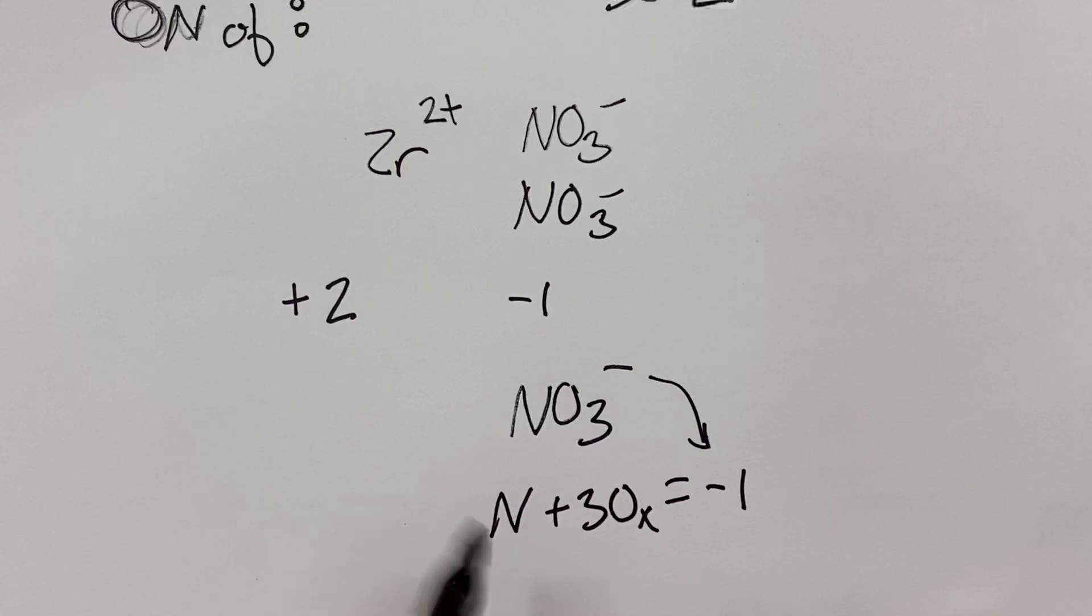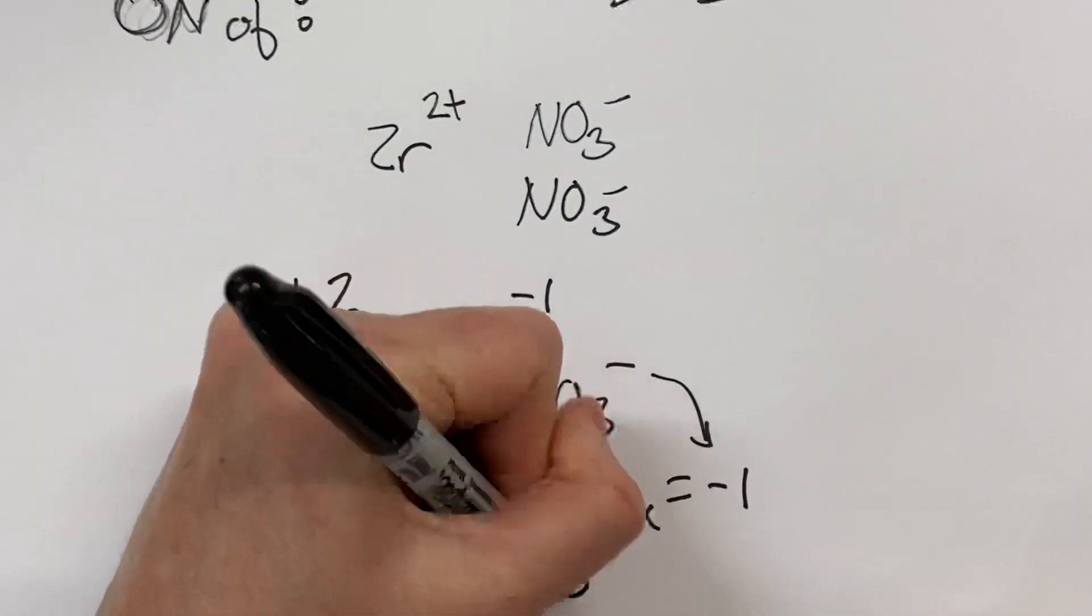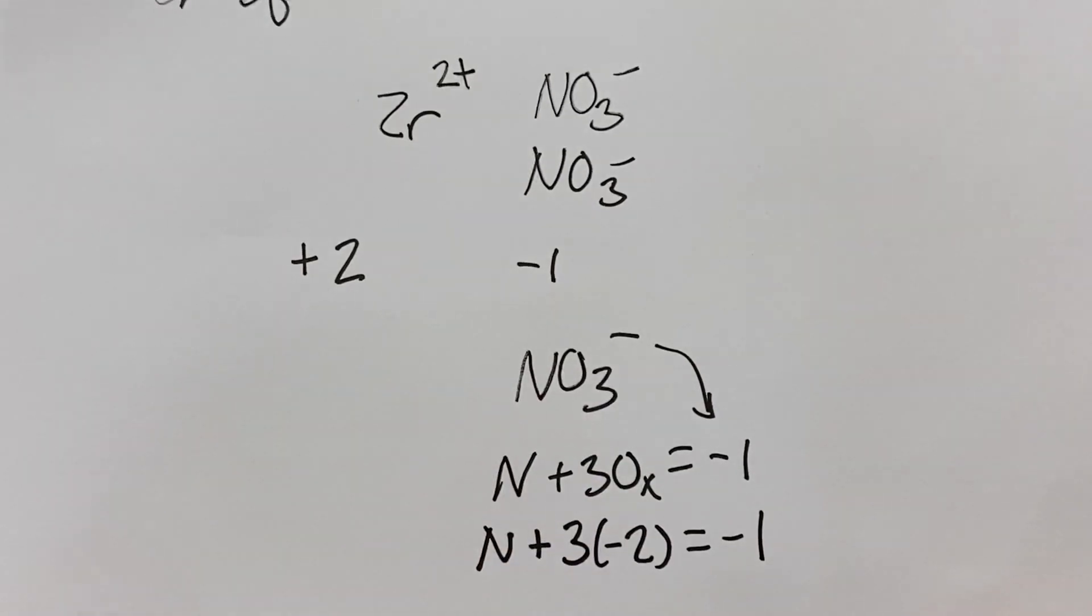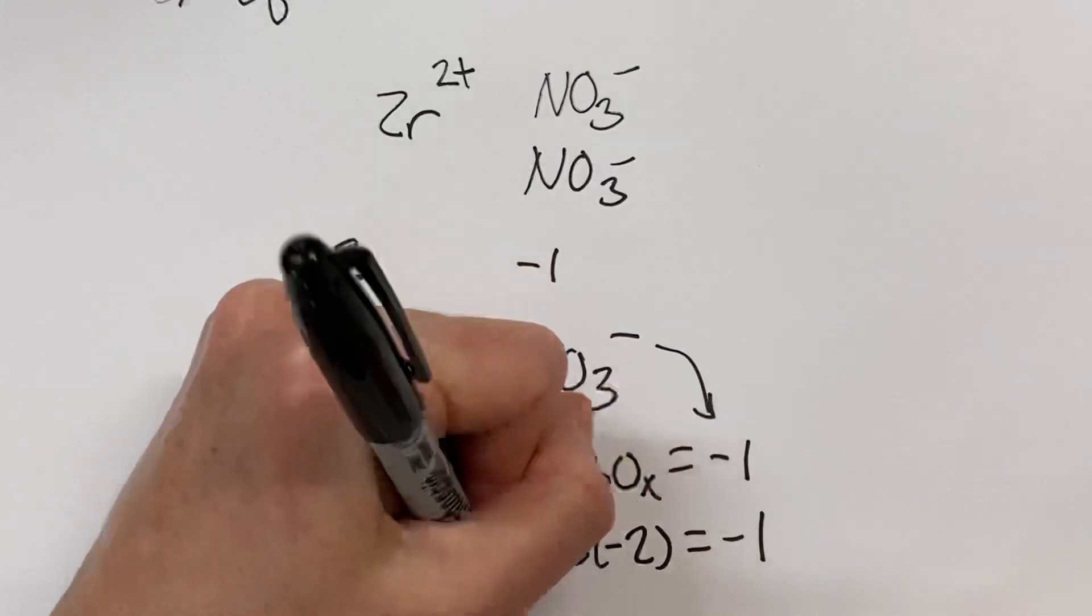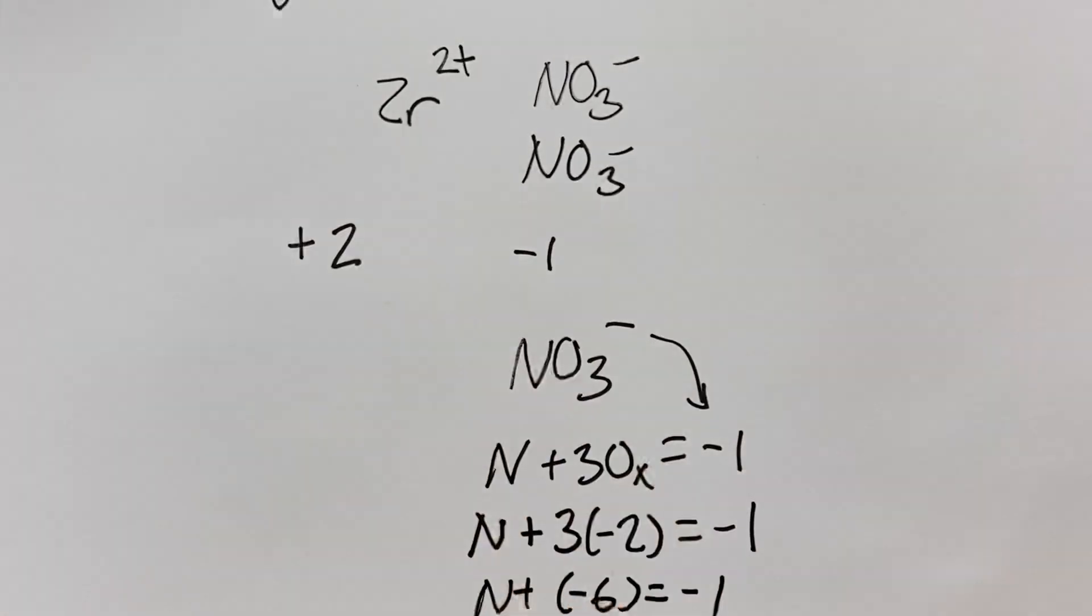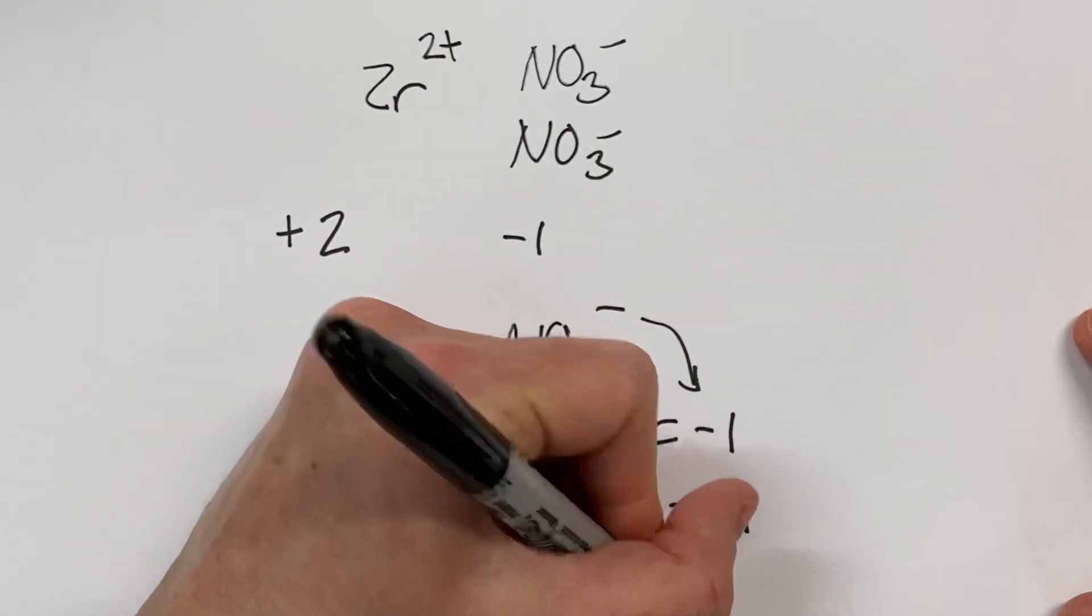All right, so now we know that nitrogen plus three oxygens must equal negative 1. Well, the great thing is we also know oxygen is negative 2, according to the rules. And now with a little bit of algebra, this gives us N plus negative 6 equals negative 1. And we'll find out that nitrogen, if you add 6 to both sides, nitrogen equals positive 5.